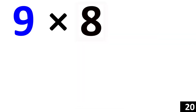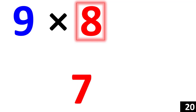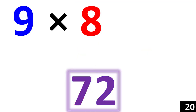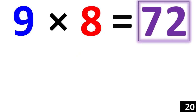Now for our last example — 9 times 8. Starting from the number 8, 1 less than 8 is 7. So, 7 is your first number. Then we say, 7 plus what number would give us 9? 2. Therefore, 72 is your answer.